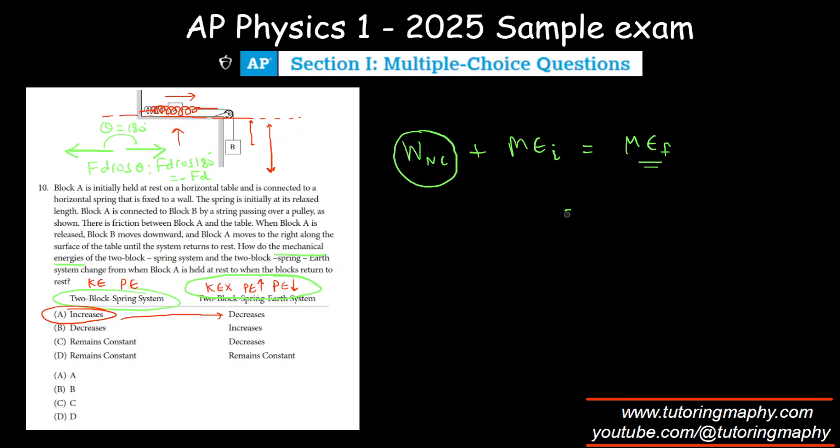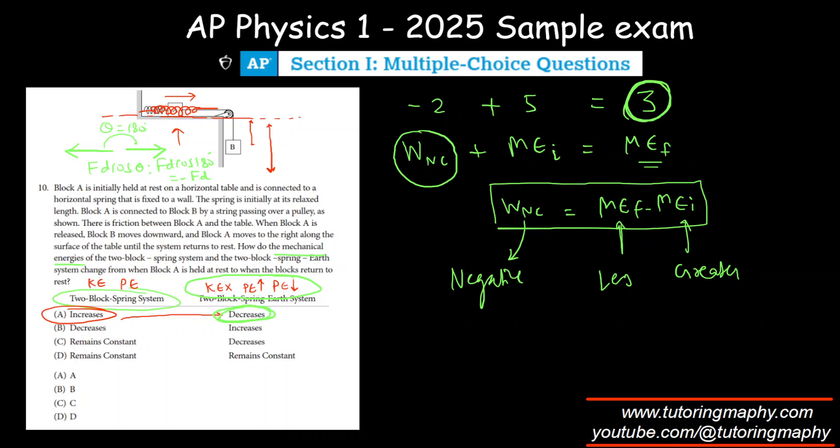So this is a negative number, which means that final minus initial, if we bring subtract final on both sides, is work done by a non-conservative force. And since this value is negative, it means that obviously ME final must be less, and this should be a greater number. Because greater minus less... no, less minus greater will only give a negative number, right? It's like something like -2 + 5 = 3. So obviously this is a smaller number final, and that's what we are saying: it decreases. So it has to be Option A.